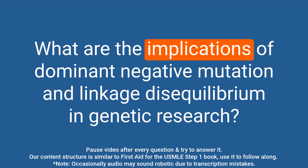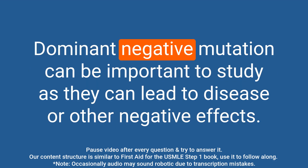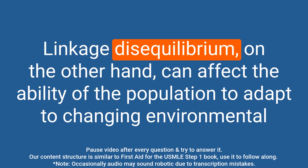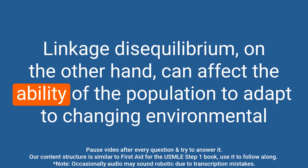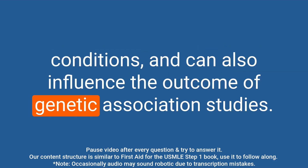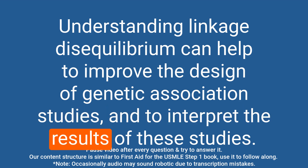Question: What are the implications of dominant negative mutation and linkage disequilibrium in genetic research? Answer: Dominant negative mutations can be important to study as they can lead to disease or other negative effects, and can also be studied in the context of therapeutic targets and drug development. Linkage disequilibrium can affect a population's ability to adapt to changing environmental conditions and can influence the outcome of genetic association studies. Understanding linkage disequilibrium can help improve the design of genetic association studies and interpret the results of these studies.